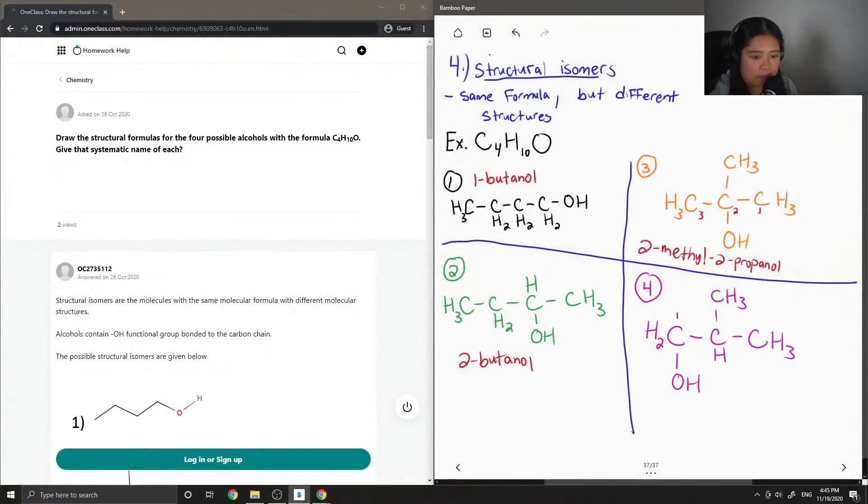Let's name this. Numbering the carbons gives us another 2-methyl, and this time it is 1-propanol.